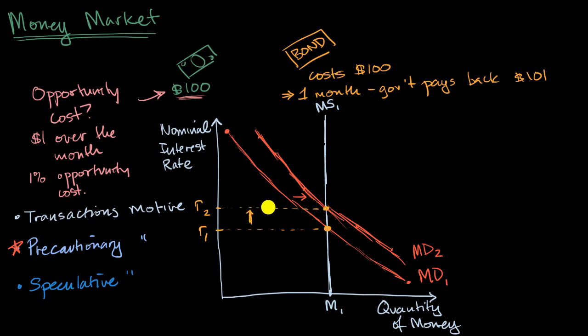And that makes sense. If more people want to hold money, in order to get people to part with that money, you have to offer them more. The opportunity cost of holding that money has to go up.